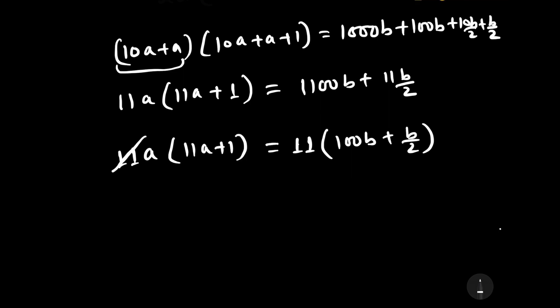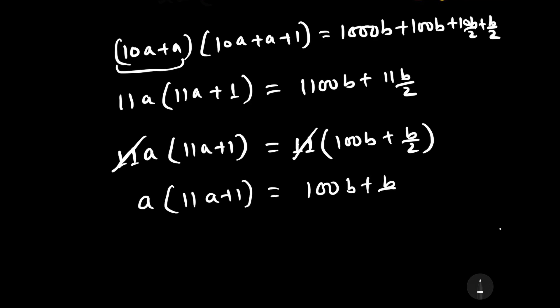Taking 11 from the left-hand side to the right-hand side, we will have a into 11a plus 1 is equal to 100b plus b by 2.